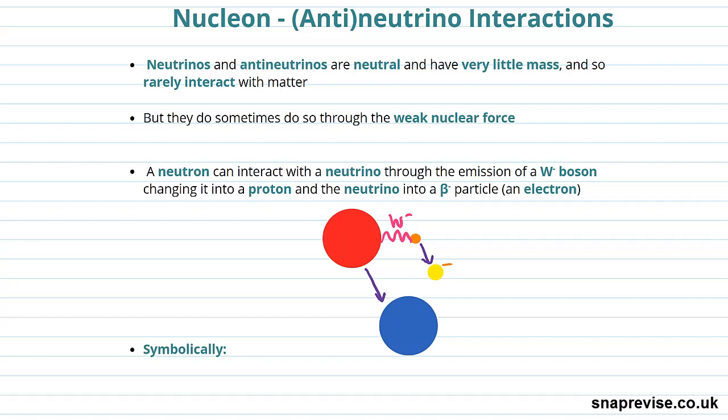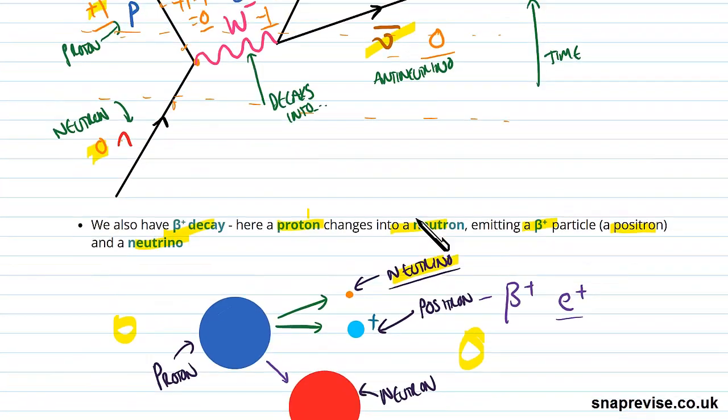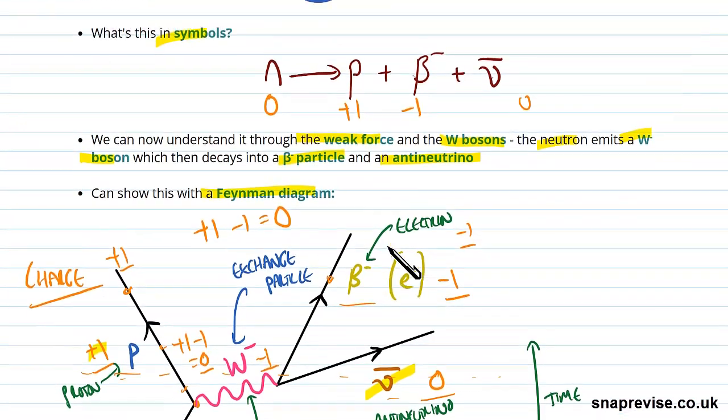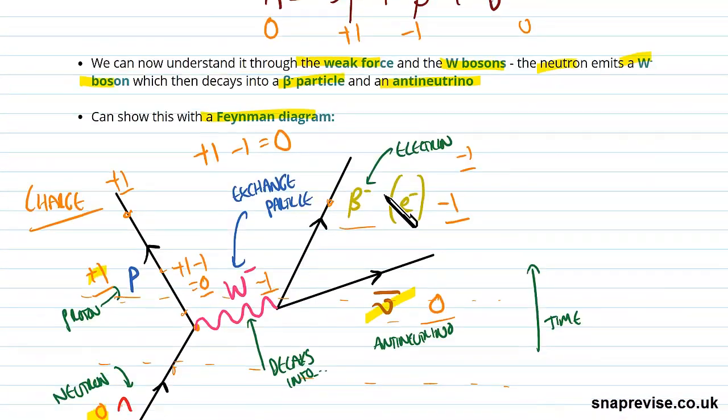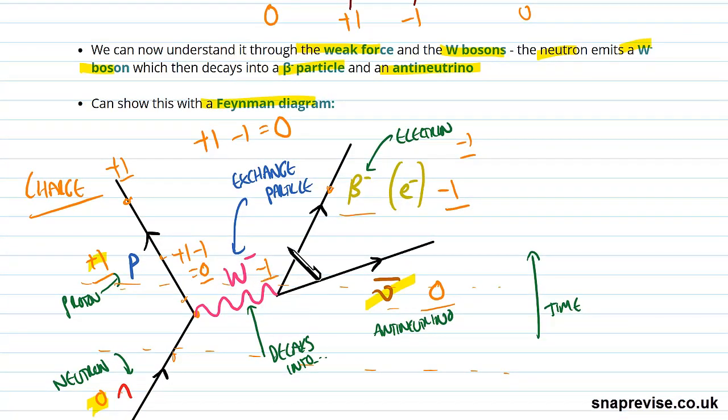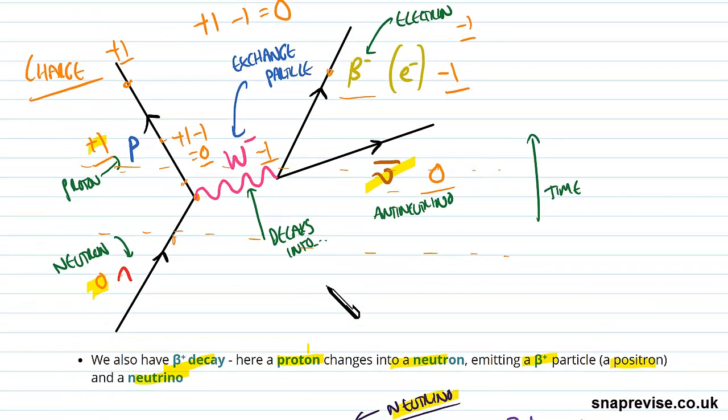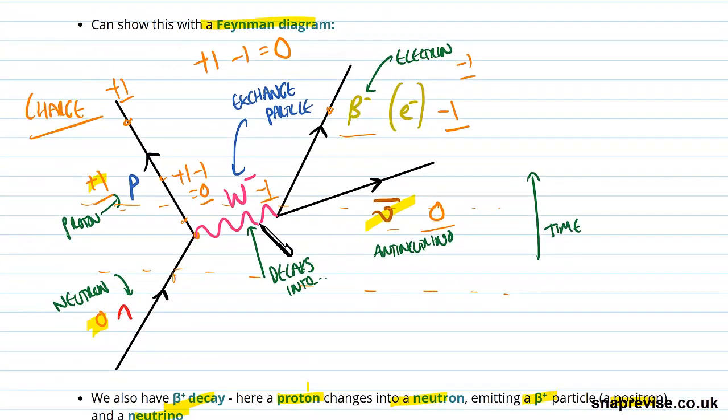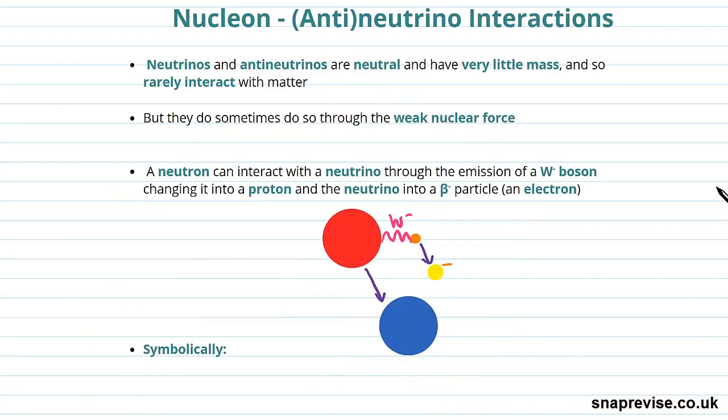The idea is we're going to have nucleons that are not decaying any longer. Remember we saw in beta decay, basically these nucleons decay through emitting a W- or W+ boson, depending on whether they were originally neutral or positive. And through doing that, that particle then decays into other stuff. That's not what's going to go on here, even though the equations are going to look very similar.